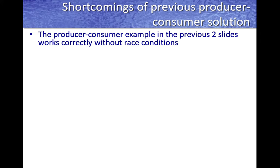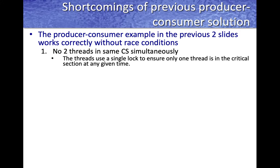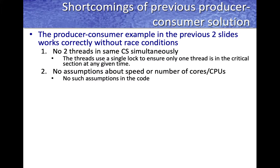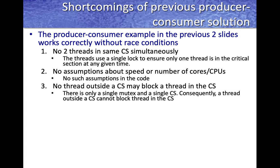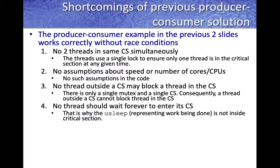The producer-consumer busy-wait example works correctly without race conditions because the critical section is correctly written — no two threads are in the same critical section simultaneously. Threads use a single lock to ensure only one thread modifies the shared queue. No assumptions are made about CPU speed or number of cores, and no thread outside the critical section can block a thread inside it. Threads don't wait forever, and all compute operations happen outside the critical section.